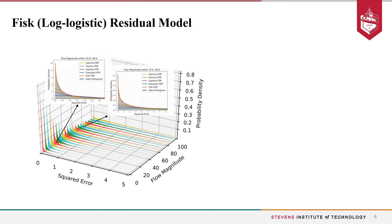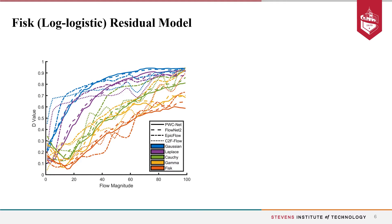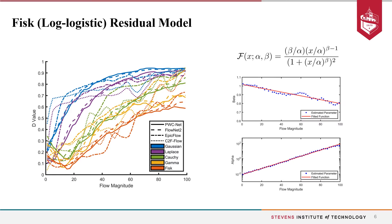The Fisk residue model is an empirically validated residue model by testing the optical flow endpoint error distribution. We explored an adaptive residue model determining the residue distribution with respect to the magnitude of optical flow observations. A thorough KS test also shows that Fisk residue model generalizes well to different optical flow estimators. Furthermore, the Fisk model parameterization is estimated with respect to the observed flow magnitude respectively with linear and log-linear regression.